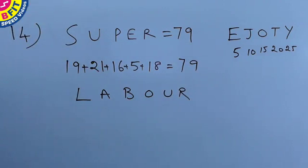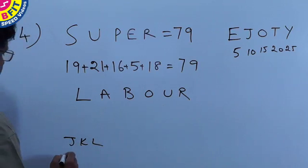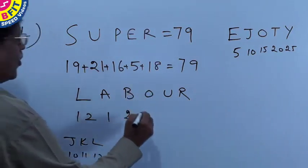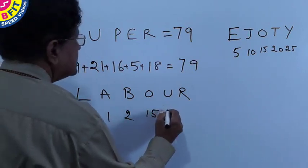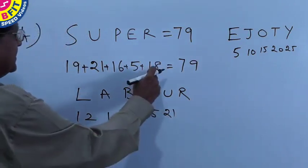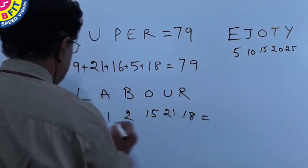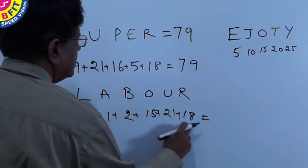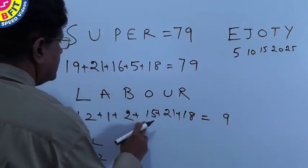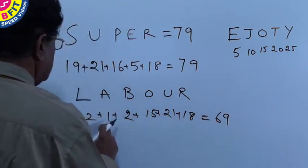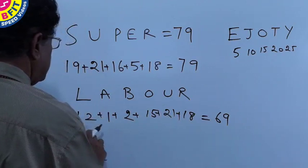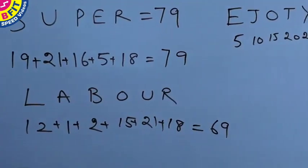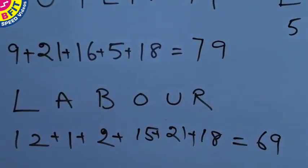For LABOR: L — J is 10, K is 11, L is 12. So L is 12. A is 1. B is 2. O: MNOP, O is 15. R: O is 15, P=16, Q=17, R=18. R is 18. Now we add all these: 12 + 1 + 2 + 15 + 18. The code for LABOR is 69, based on the positional value of alphabets.